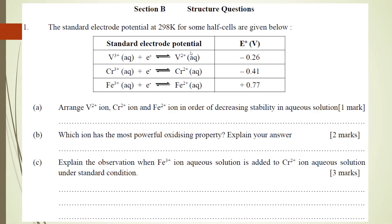For decreasing stability, we look at the half-cell equations and want the equilibrium to shift more to the right. The more positive the E0 value, the more the equilibrium shifts right, meaning the ion is more stable in the reduced form. So the most stable is Fe2+, followed by V2+, and the least stable is Cr2+. For decreasing stability: Fe2+ > V2+ > Cr2+.